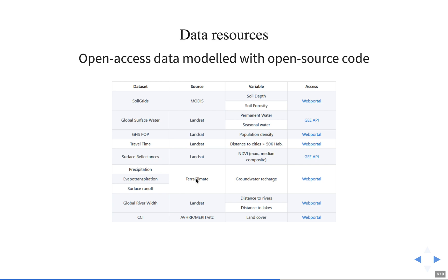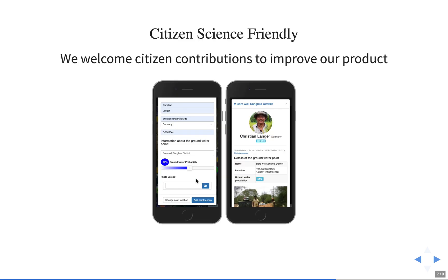We also include information on socioeconomic factors like population density, which informs us on how likely a certain groundwater deposit might be contaminated — important when thinking about using this water for things like crop production. My colleague Christian will talk in more detail about how users can provide new information to improve our product.